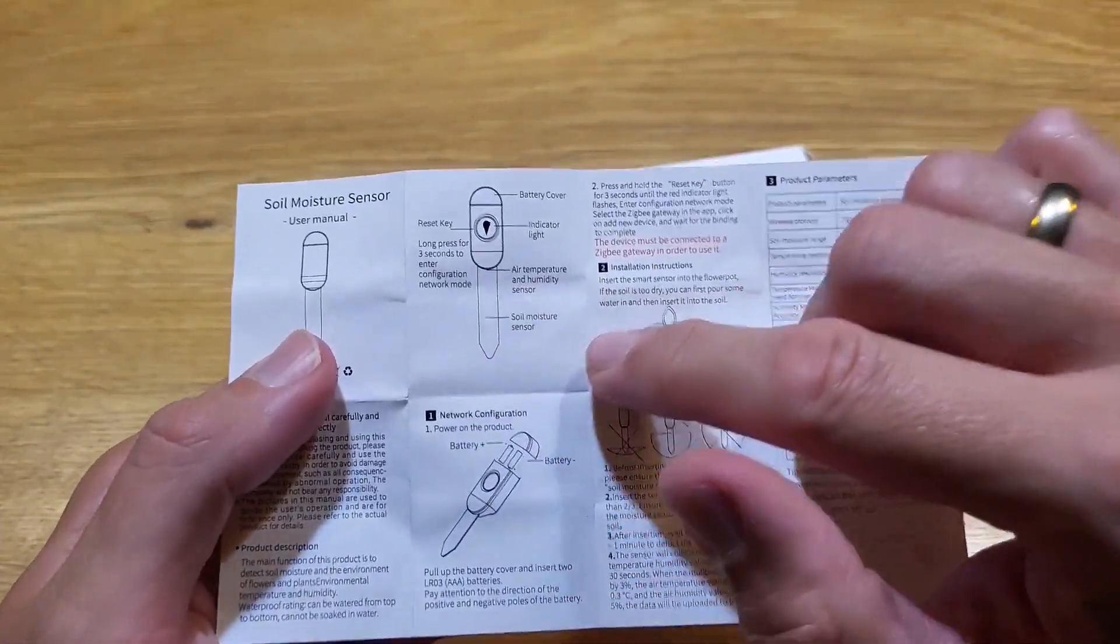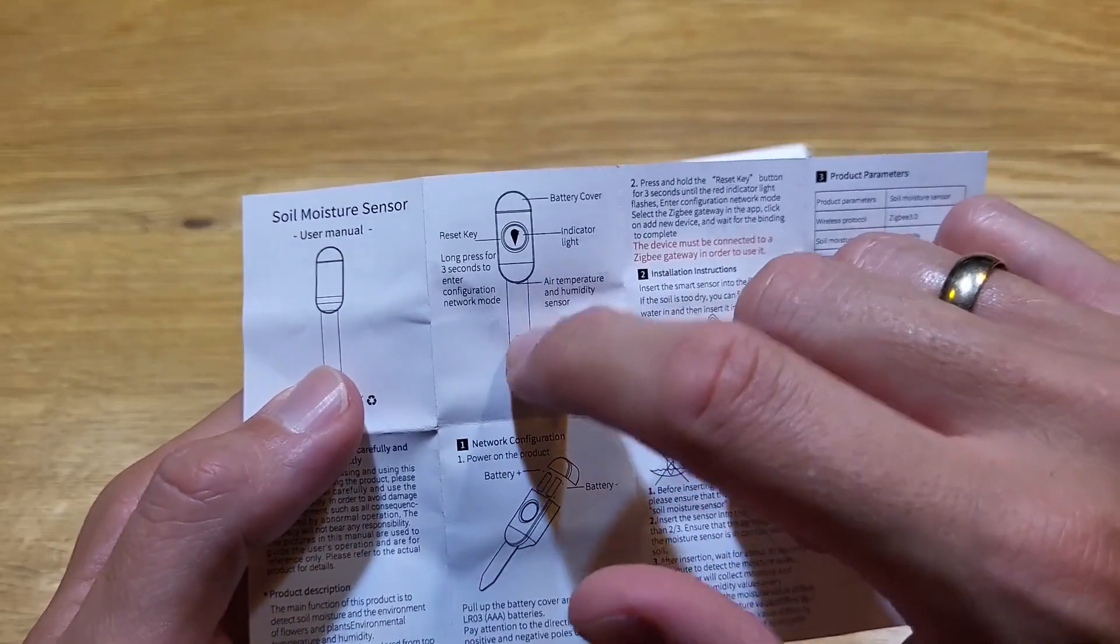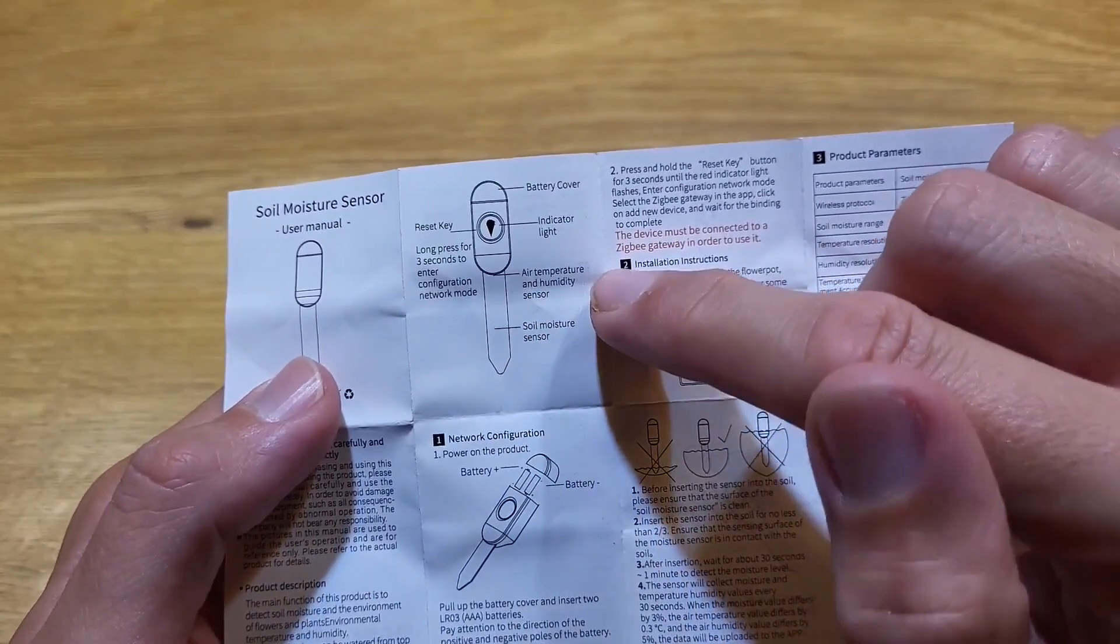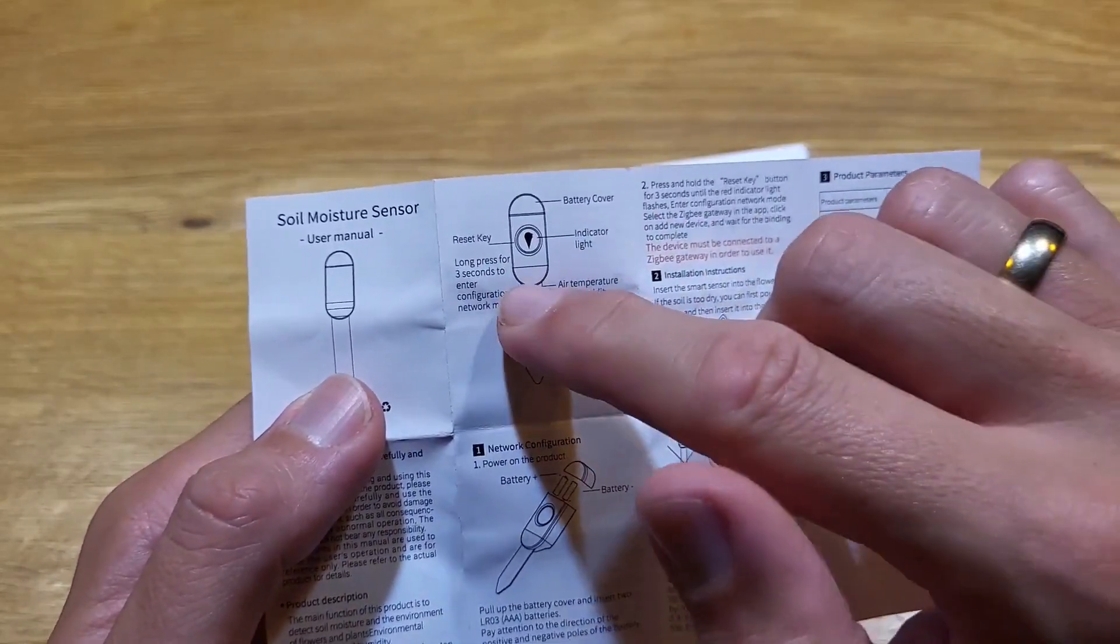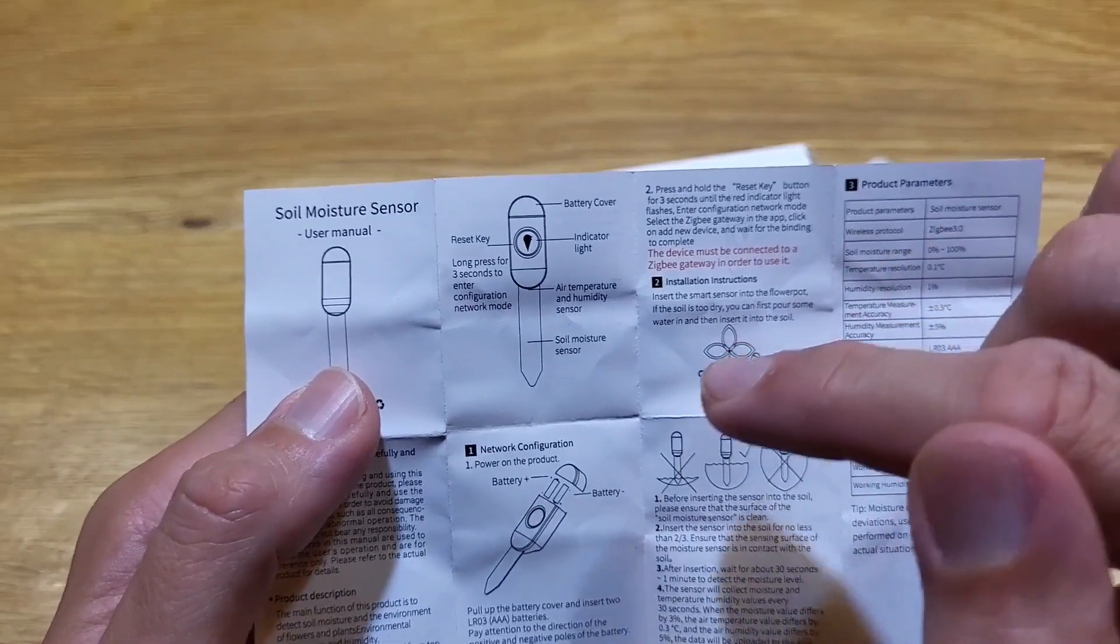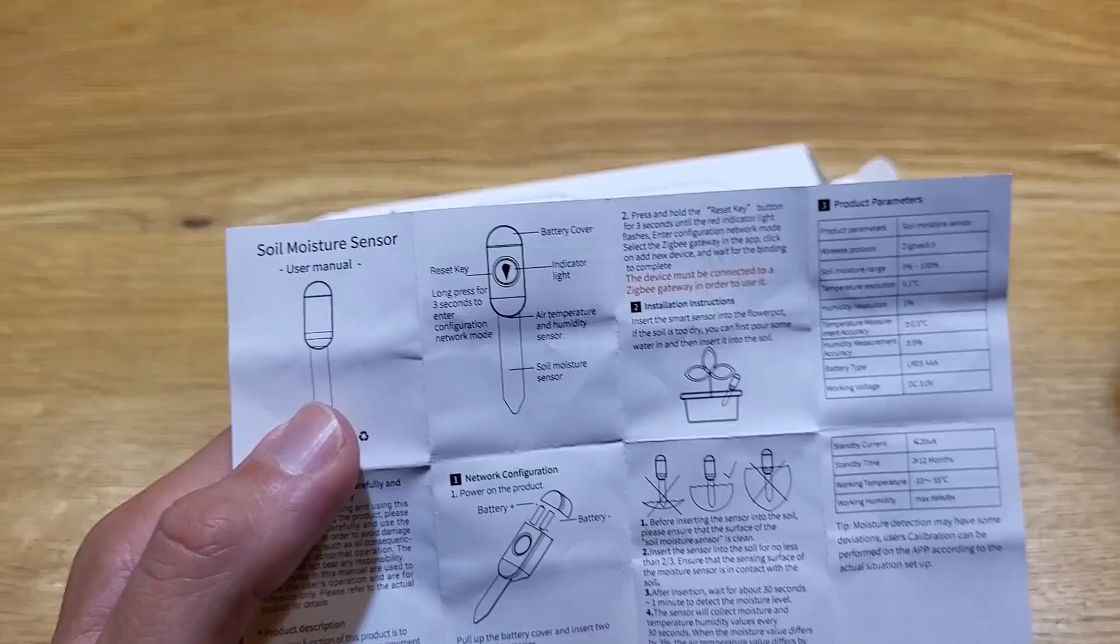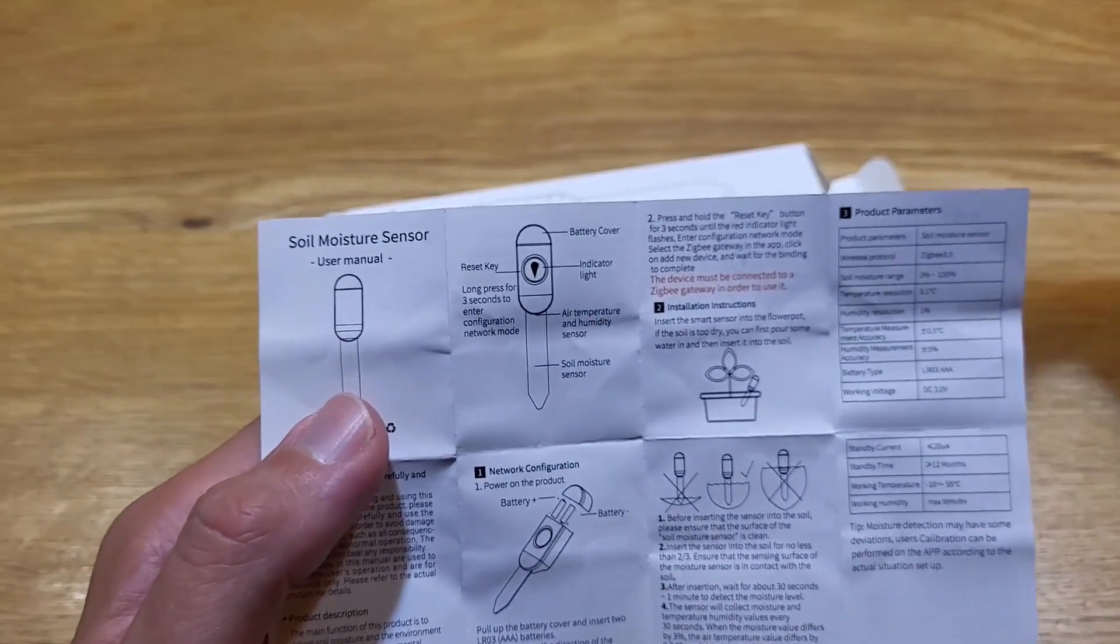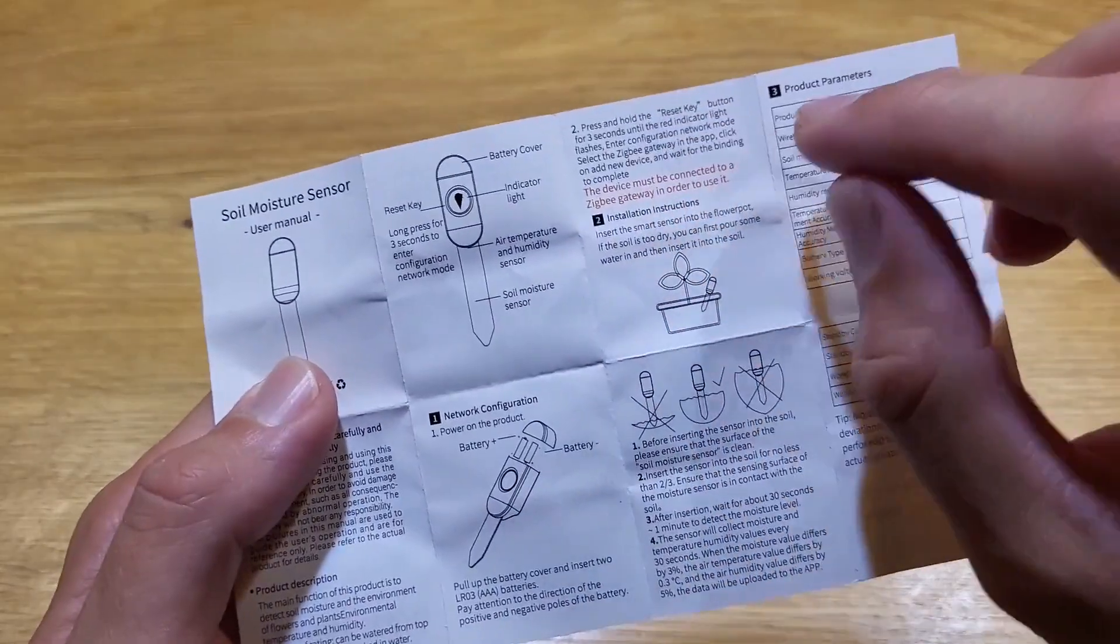So here you can see a bit what is in the device. The soil moisture sensor is on this part, but the air temperature and humidity is under the cover where are the batteries. So it's not reading the temperature of the soil, what I think would be good to know, especially when you have the pots on the sun, so we don't want to get them too hot.